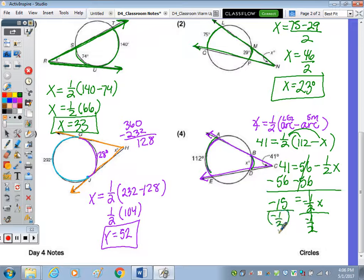Dividing by negative 1 half. Make sure you put that in parentheses and using the calculator. We end up with X equals 30.